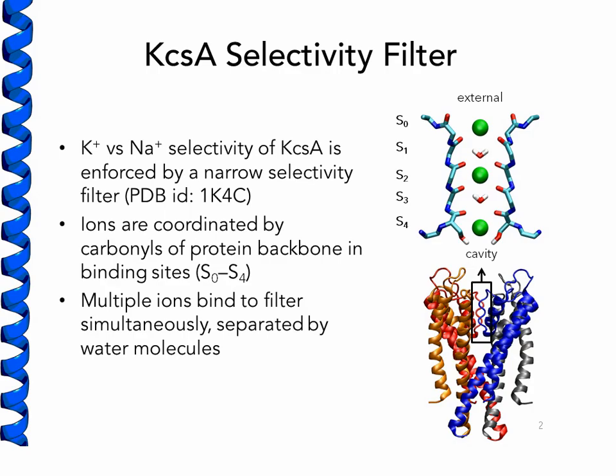The channel we chose for this study was KCSA, which is a uniquely well-characterized potassium channel. Potassium permeates through these channels at a much faster rate than sodium. This selectivity is enforced by a narrow filter where the four subunits of the protein meet to form ion-binding sites. In these sites, the ions are coordinated by carbonyls from the protein backbones. We label these sites S0 to S4.